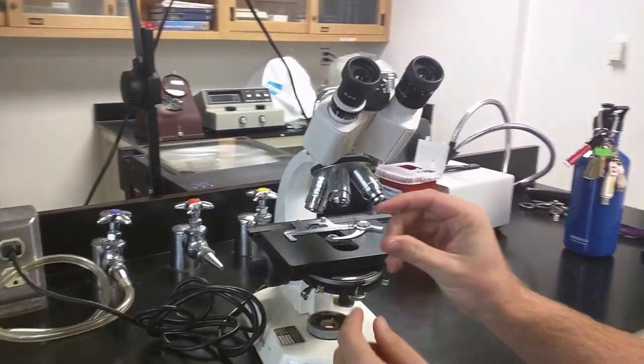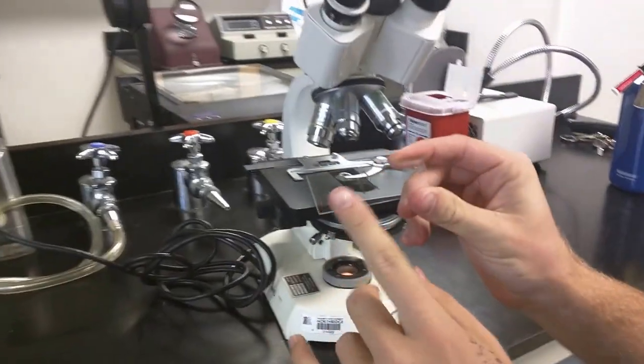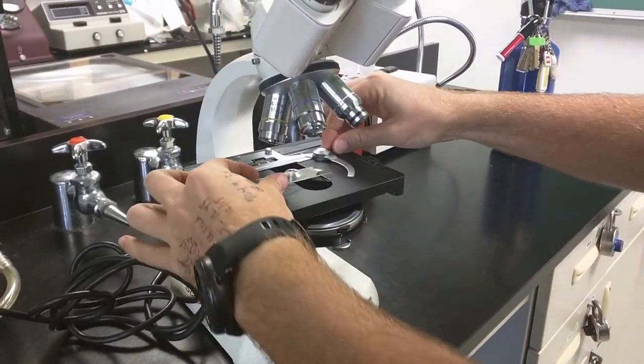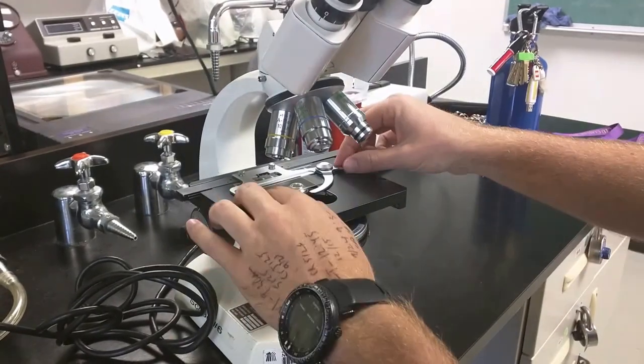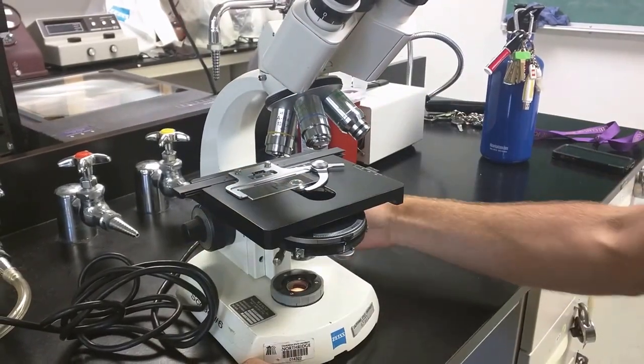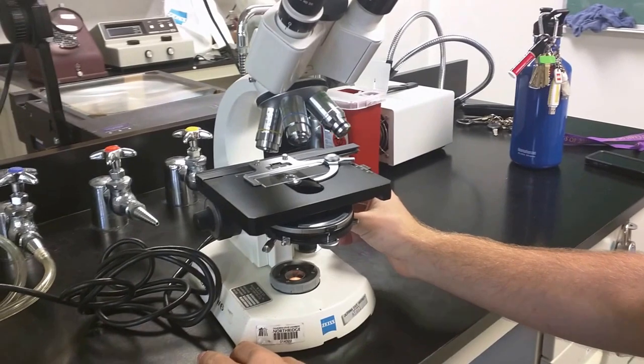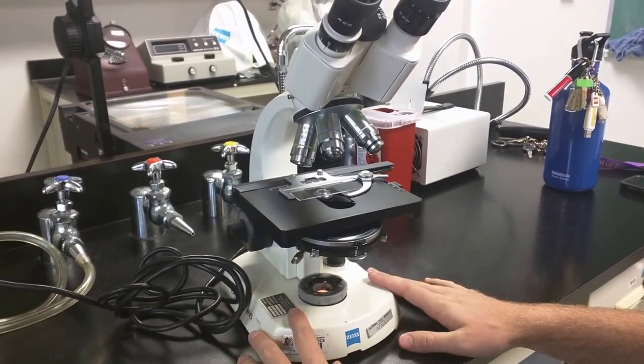I've got a slide here with an R on it. This is going to be my test slide to focus on to line the scope up. So I'm just going to slip it right in here making sure it's securely locked in place. Move it to the center. So I'm looking at the R that I wrote on it.